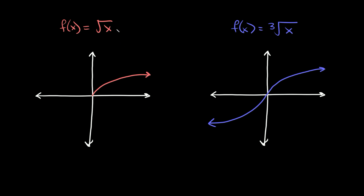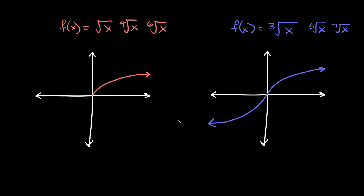If you're dealing with a higher root — whenever you're dealing with an even root, it's going to look basically just like the square root. So the fourth root of x, the sixth root, eighth root, tenth root — all those graphs look almost exactly the same. Now if you have an odd-numbered root, like the fifth root or the seventh root of x, they're all going to look something like this cube root graph.